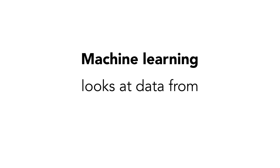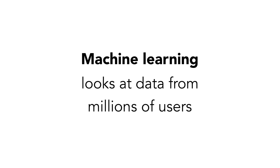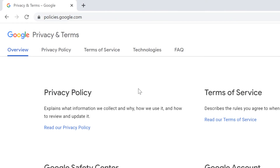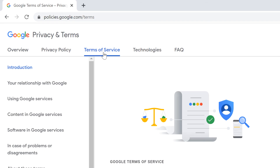Smart Compose is powered by machine learning that looks at data from millions of users. Turning Smart Compose off will stop the suggestions from appearing, but it doesn't stop Google from being able to read your documents. Google claims that your account is secure and that privacy is always maintained, meaning that no human will ever read your writing and your private information won't be exposed. You can find out more by reading Google Drive's Terms of Service and Privacy Policy.